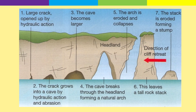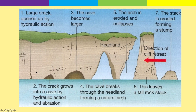The next set of erosional features we're going to look at is based on this diagram. We're starting on the left and moving to the right. The first thing that happens is a large crack is opened up by hydraulic action — the process of water filling in the cracks and pushing air deeper into the crack, making it wider. The crack then grows into a cave by hydraulic action and abrasion, so the crack gets bigger and forms into a cave.